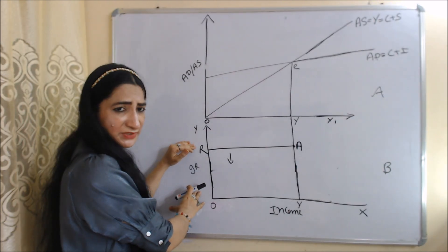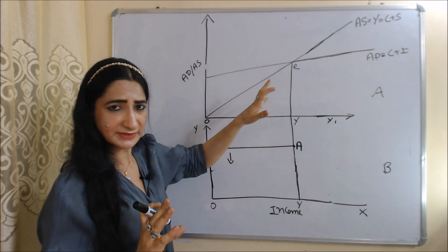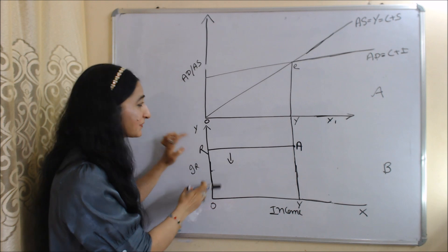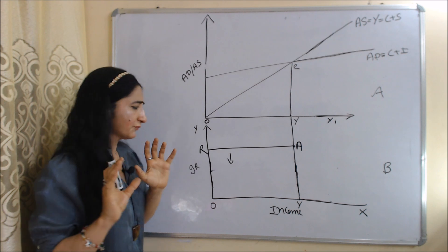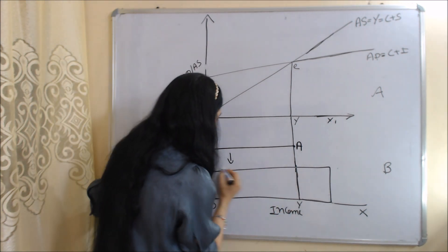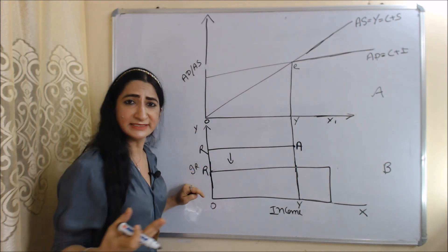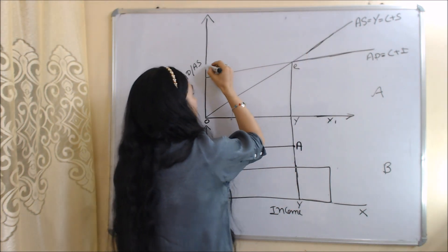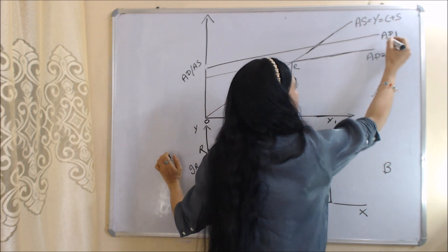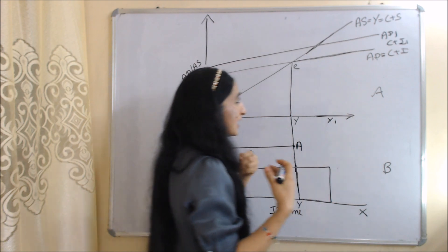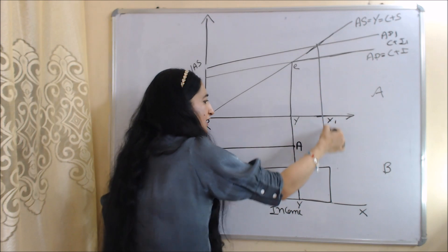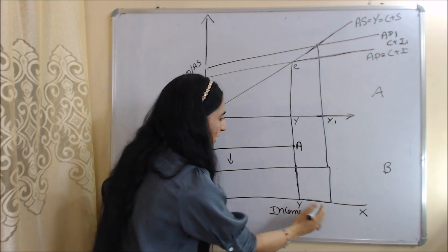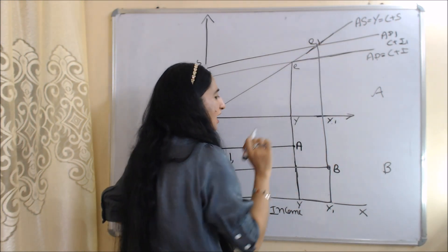In diagram B, the x-axis has income and the y-axis has interest rate. Point A also shows equilibrium in the goods market. At equilibrium, the initial interest rate is OR and the initial equilibrium income is OY. Now suppose interest rate falls from OR to OR1. As interest falls, investment will increase, so aggregate demand will also increase — the AD curve shifts forward from AD to AD1, where C plus I1 is the new investment. As aggregate demand increases, income also increases from OY to OY1. In diagram B, E1 and B are the new equilibrium points.